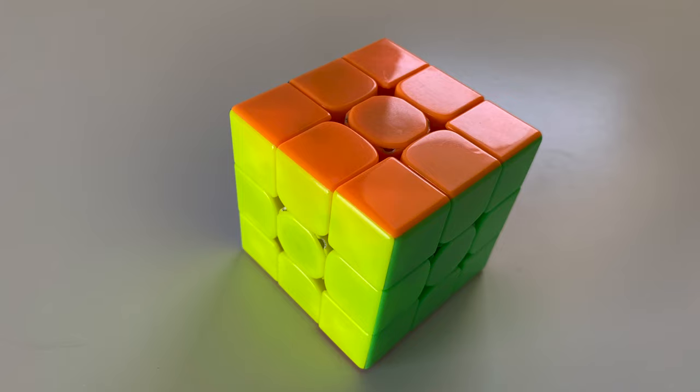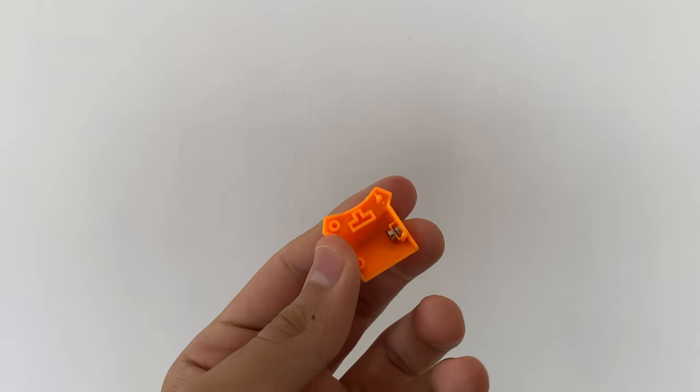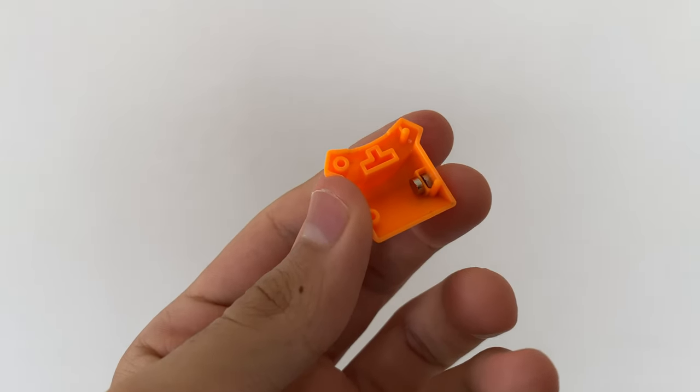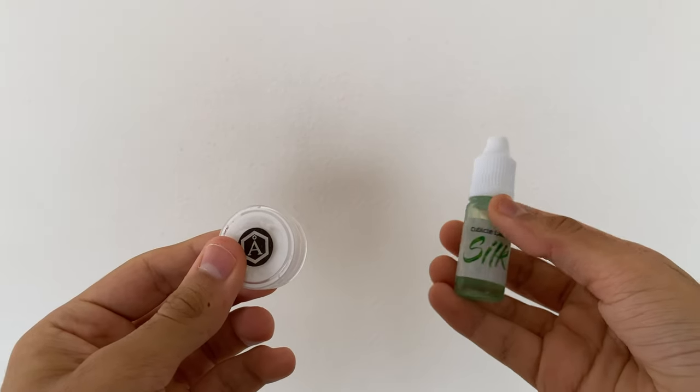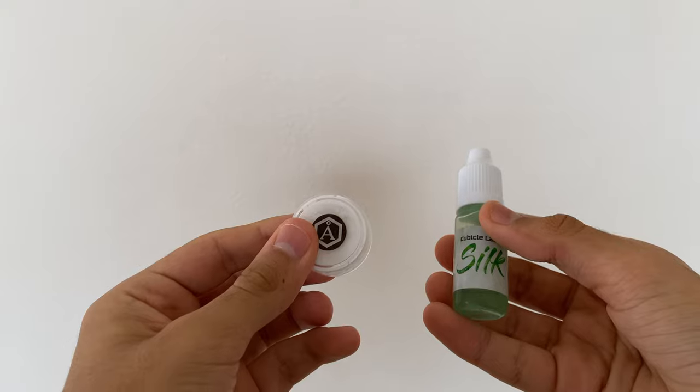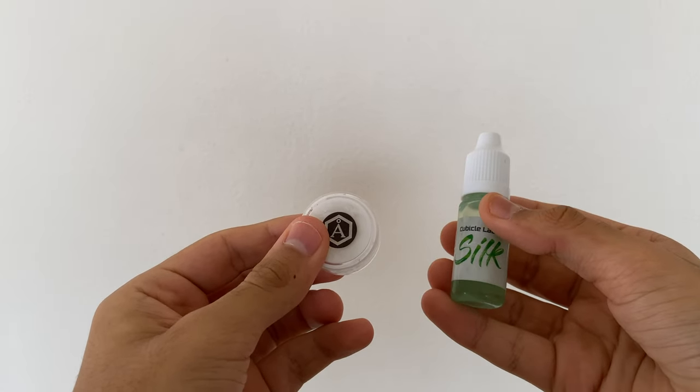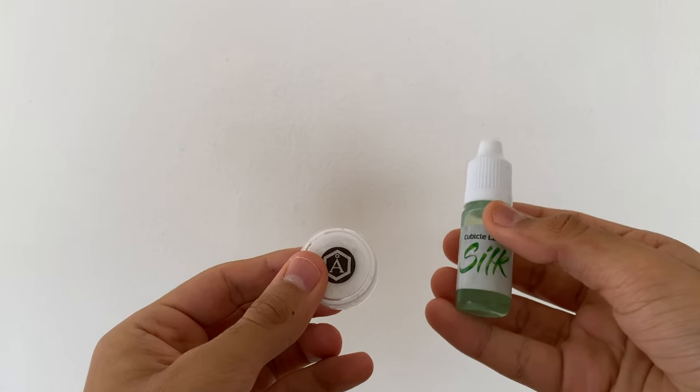In my opinion, out of the box, the magnet strength felt a lot like the GTS 2M which in my opinion is too weak for this puzzle. So I added extra magnets to each edge half. For my setup, I used a ton of Angstrom Dignitas on the pieces followed by two drops of cubicle lab silk. This gave the puzzle a less crunchy and more smooth feel kind of like the original GTS 3M.